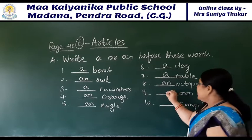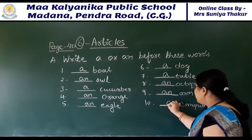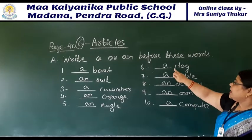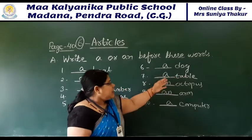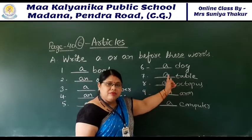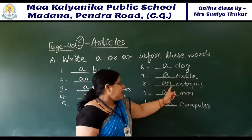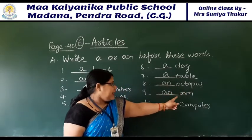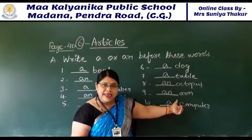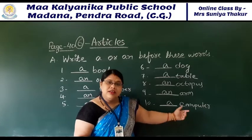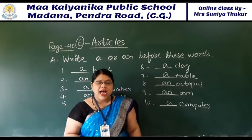There is 'arm' and 'computer'. A computer - why? Because C is your consonant, we have used A. Here T is your consonant, we have used A. Look at octopus - O is your vowel, we have used AN. There is 'arm' - A is your vowel, we have used AN. Then C is your consonant, we have used A - a computer. I hope you all have understood this.